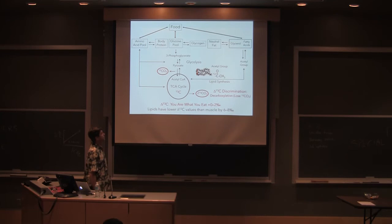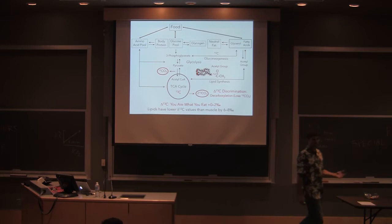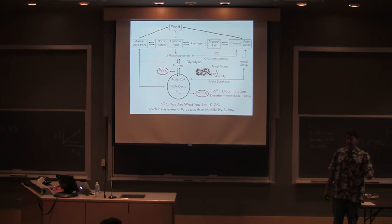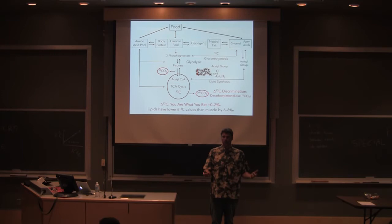So lipids have lower carbon isotope values than muscle. You can also take lipids and make glucose out of it. A lot of animals that don't eat a lot of carbohydrates, like marine mammals, do this. They take fats and they can make glucose out of it.